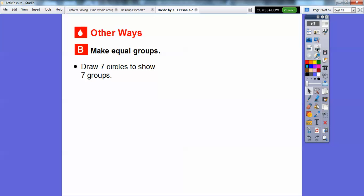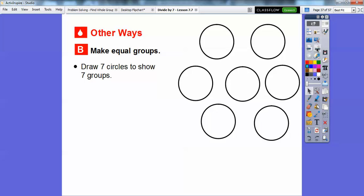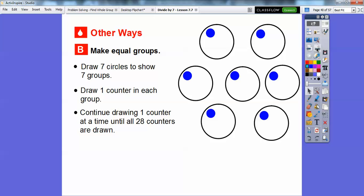All right, or we can make equal groups. So we've done this before. We can draw seven circles to show the seven groups or the seven teachers. There's seven different circles right there. And then we can draw one counter in each group. So there's one counter in each group. And then we can continue drawing one counter at a time until all 28 counters are drawn. So here's seven counters right here. And this is for my seven teachers. So if we had 28 tiles piled over here, I'm going to start counting. So there's seven. So there's eight, there's nine, there's 10. Notice one goes in each until all of them have the same amount.